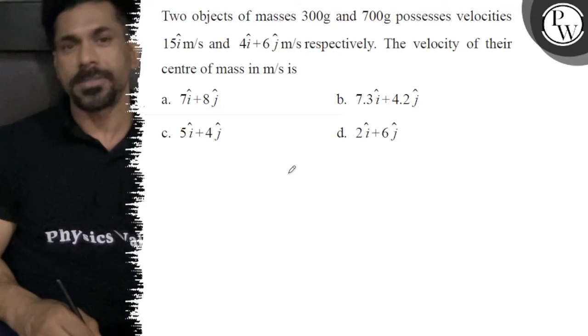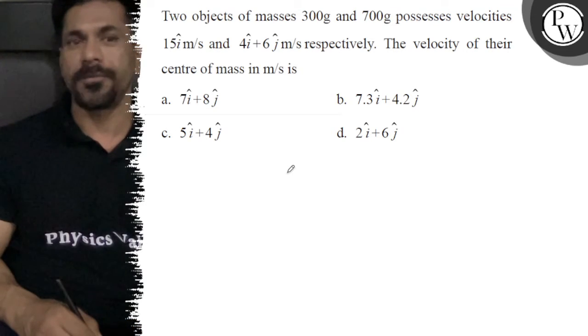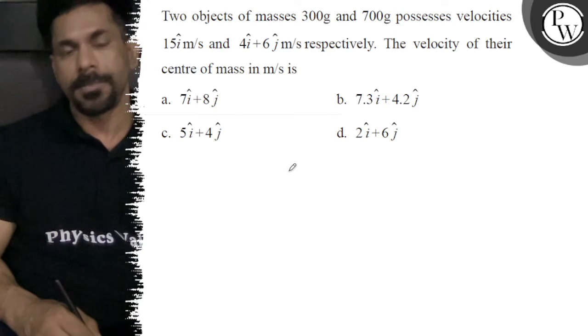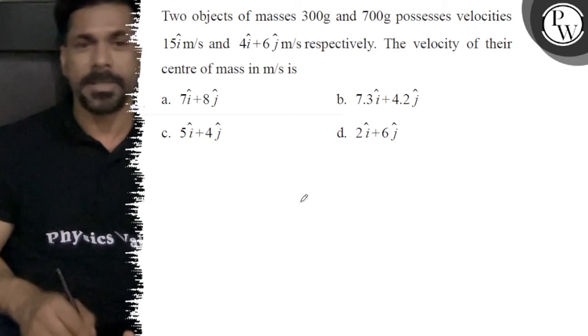Hello, let's see the question. Two objects of masses 300 grams and 700 grams possess velocities of 15î m/s and 4î + 6ĵ m/s respectively. The velocity of their center of mass in m/s is: